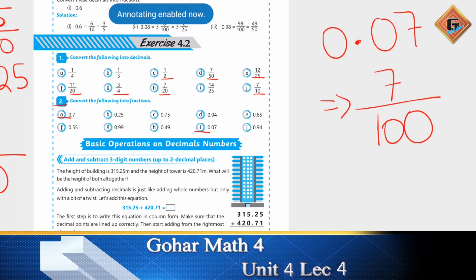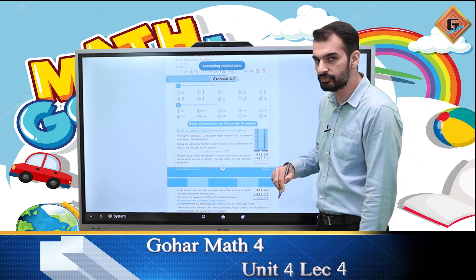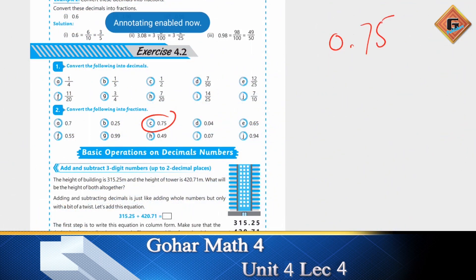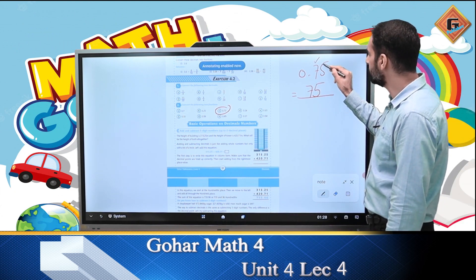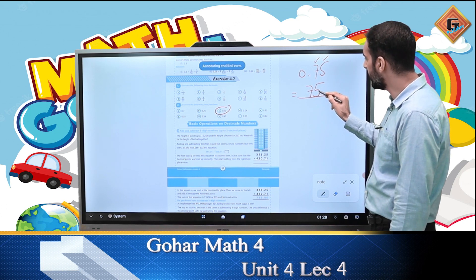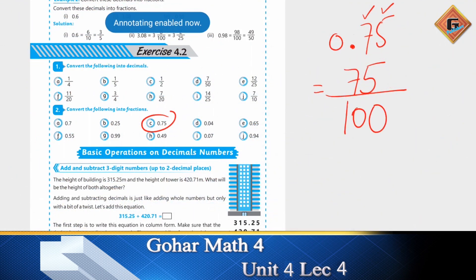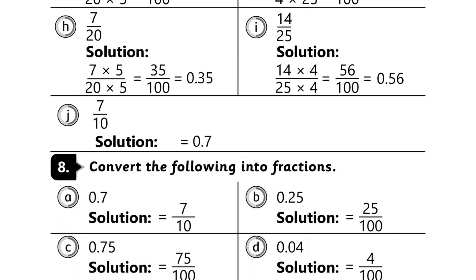ध्यान रखें: decimal के बाद 10th place पे कुछ लिखा है या नहीं। अगर 100th place पे कुछ लिखा है तो denominator 100 आएगा। एक और example — 0.75: 7 था 10th place पे और 5 था 100th place पे, तो 75 ऊपर और decimal 100th place तक जा रहा है इसलिए नीचे 100 लिखेंगे — यानि 75/100। बाकी questions आप solve करके answers से match कर सकते हैं।